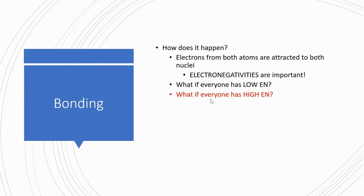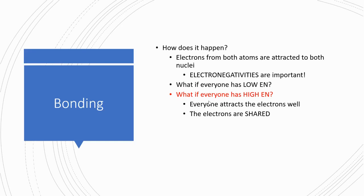If everyone has high electronegativity, that means both atoms can pull the electrons into their own electron cloud, and none of those atoms are really able to steal the electrons away from another atom. So they're going to have to share the electrons — sometimes moving in one cloud, sometimes in another, and those clouds kind of merge. If we're talking about atoms with high electronegativity, that means we're talking about non-metals. When non-metals bond, this is called a covalent bond, and it forms a covalent molecule.